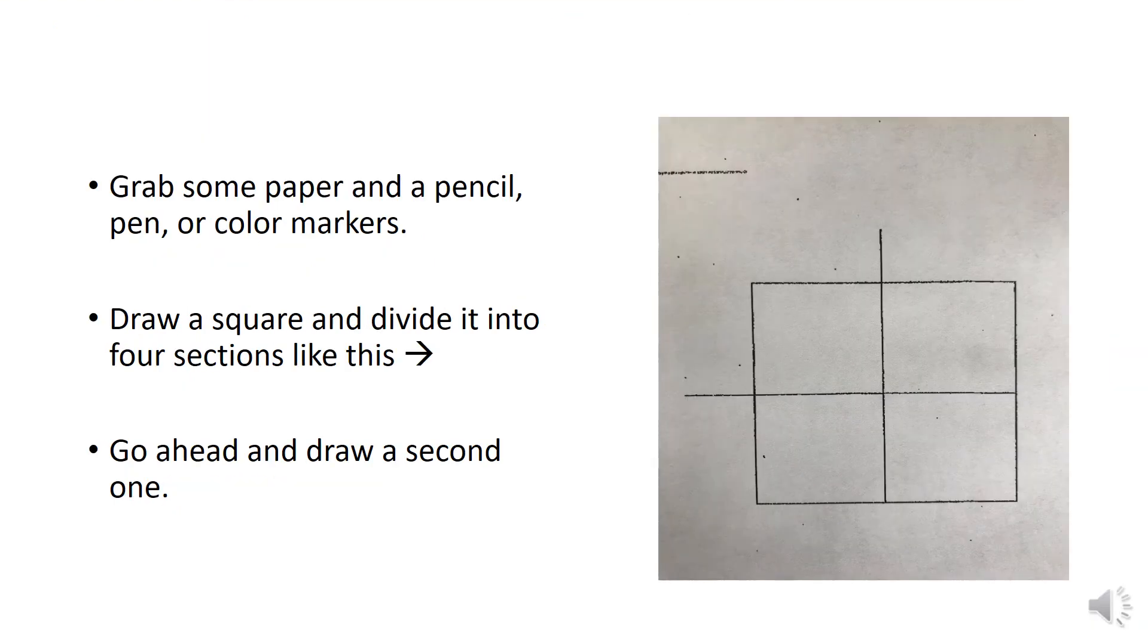Now let's do a Punnett square. So the first thing you'll need to do is grab some paper and a pencil, pen, or color markers. Draw a square and divide it into four sections like this. After you do the first one, go ahead and draw a second one. Feel free to pause this video while you do each step.